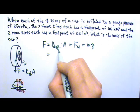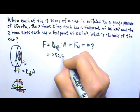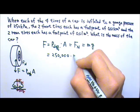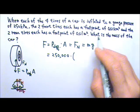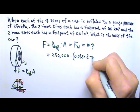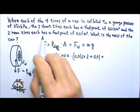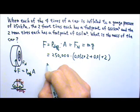We know the pressure difference is 250,000 newtons per meter squared. The area of the tires for all four of those will be 2 times 0.012 plus 0.01 times the two rear tires. So you do this calculation,